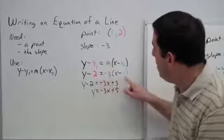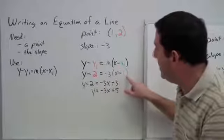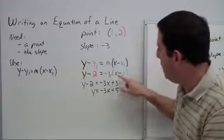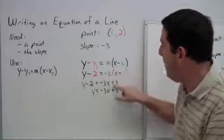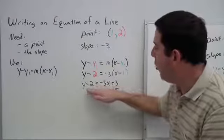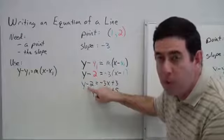After we distribute into the parentheses, negative 3 times the things that are here, we'll have minus 3x plus 3. The two negatives made a positive. Now, I still don't quite have it solved for y until I can move this negative 2.